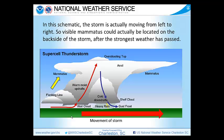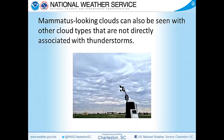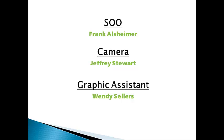You may also be viewing it from an angle. Mammatus-looking clouds can also be seen with other cloud types that are not directly associated with thunderstorms. In this example, you can see some low-level wave clouds. Thank you for joining us, and please don't forget to leave your questions on our Facebook and Twitter accounts. Have a great day.